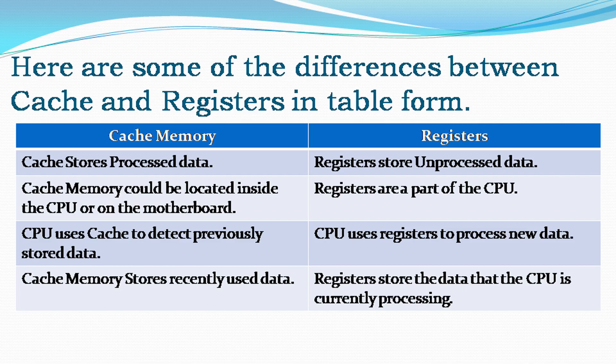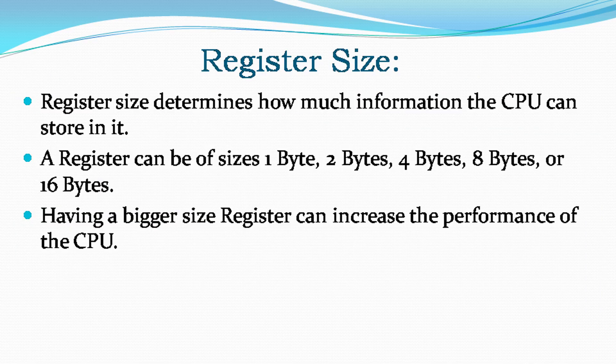Here are some of the differences between cache and registers in table form. Register size determines how much information the CPU can store in it. A register can be of sizes 1 byte, 2 bytes, 4 bytes, 8 bytes, or 16 bytes. Having a bigger-sized register can increase the performance of the CPU.